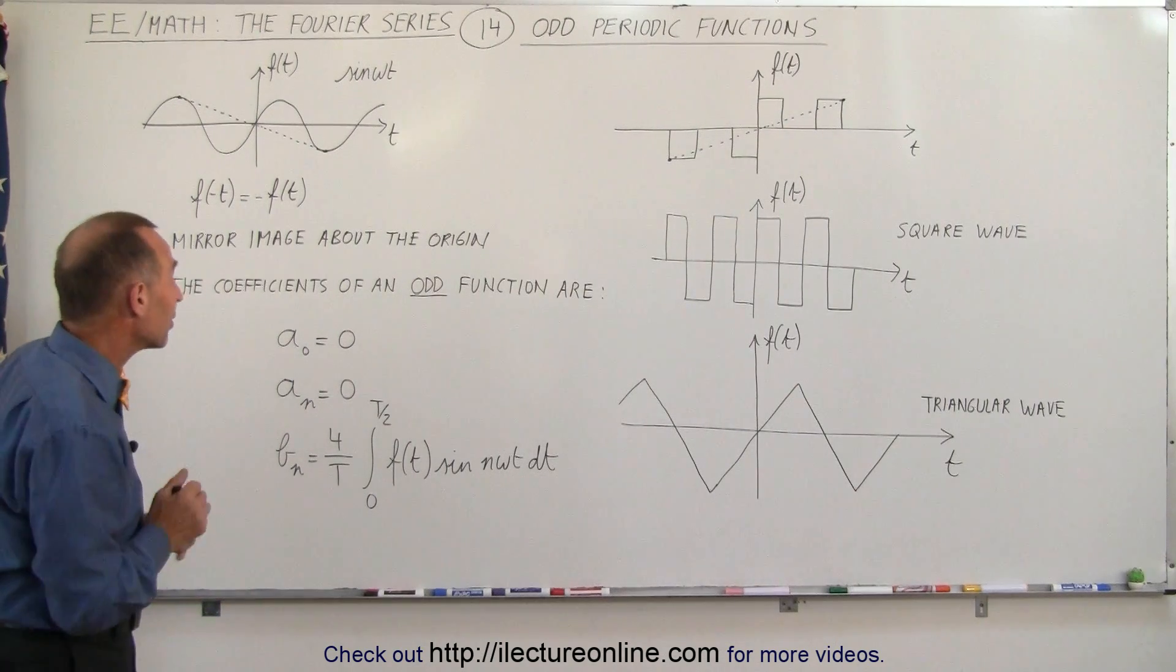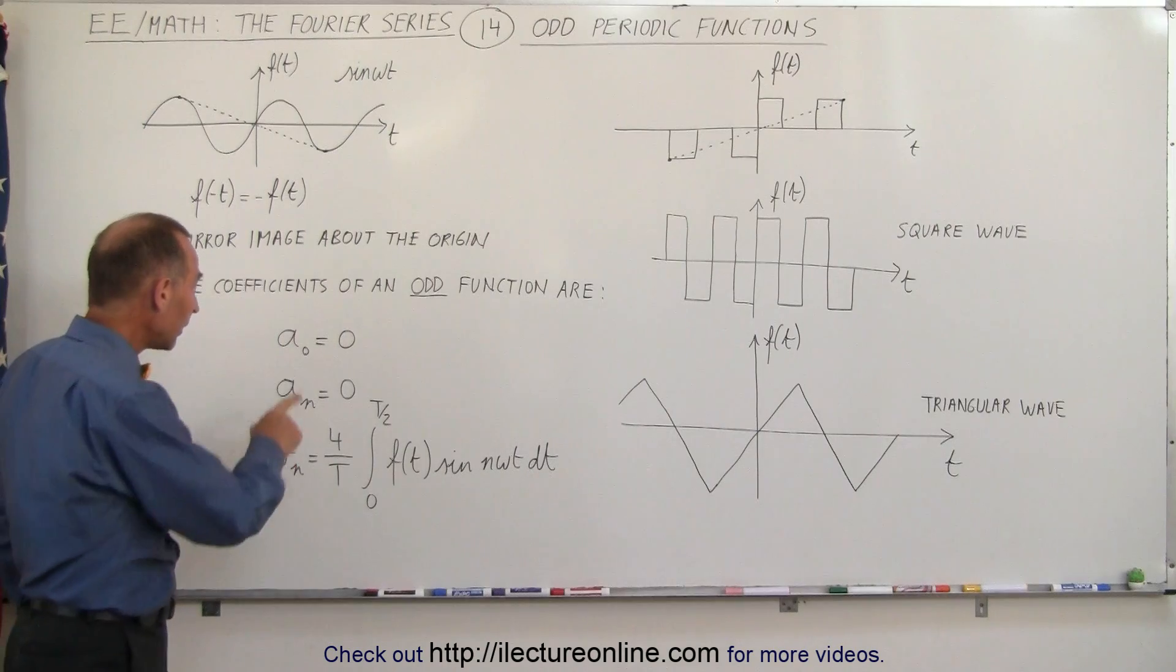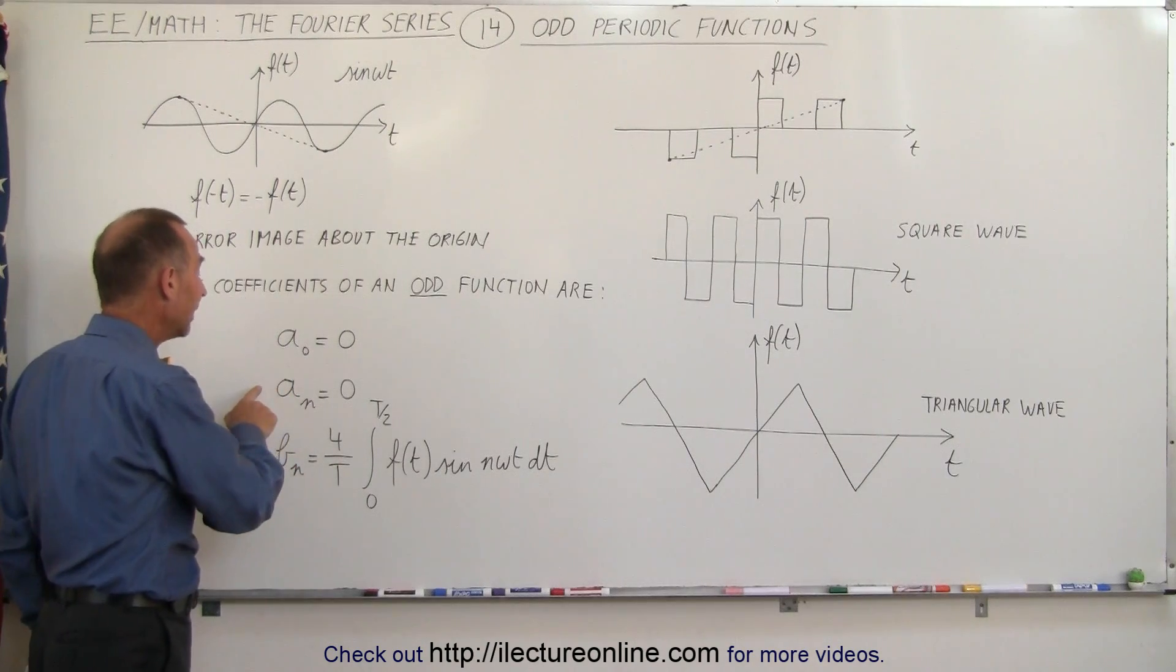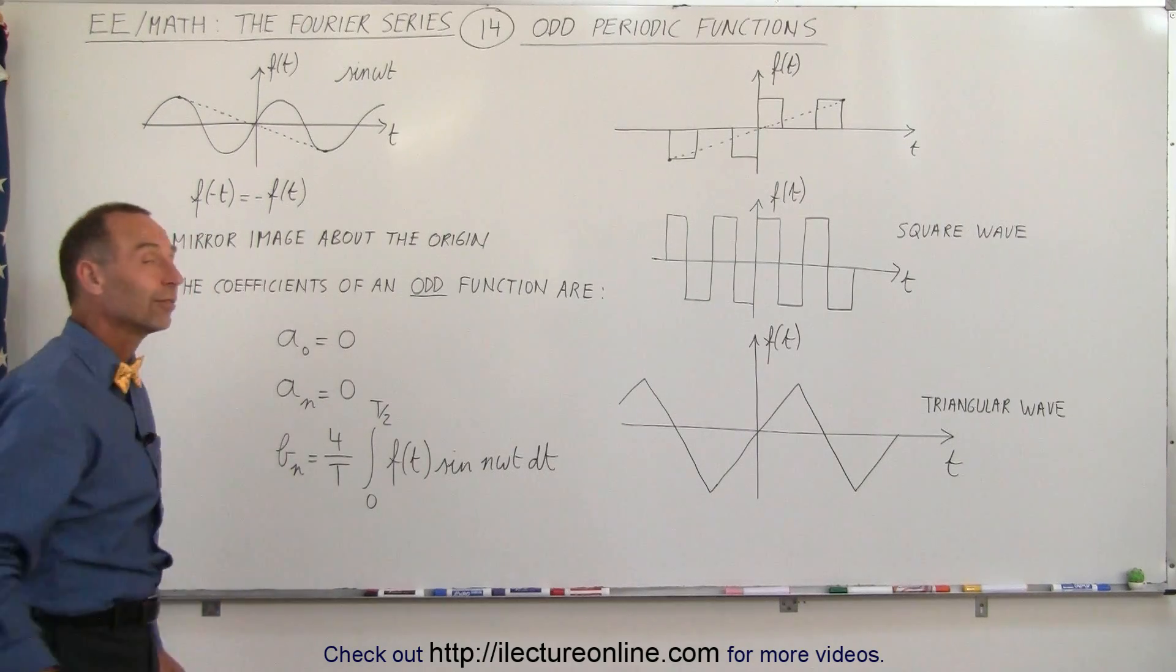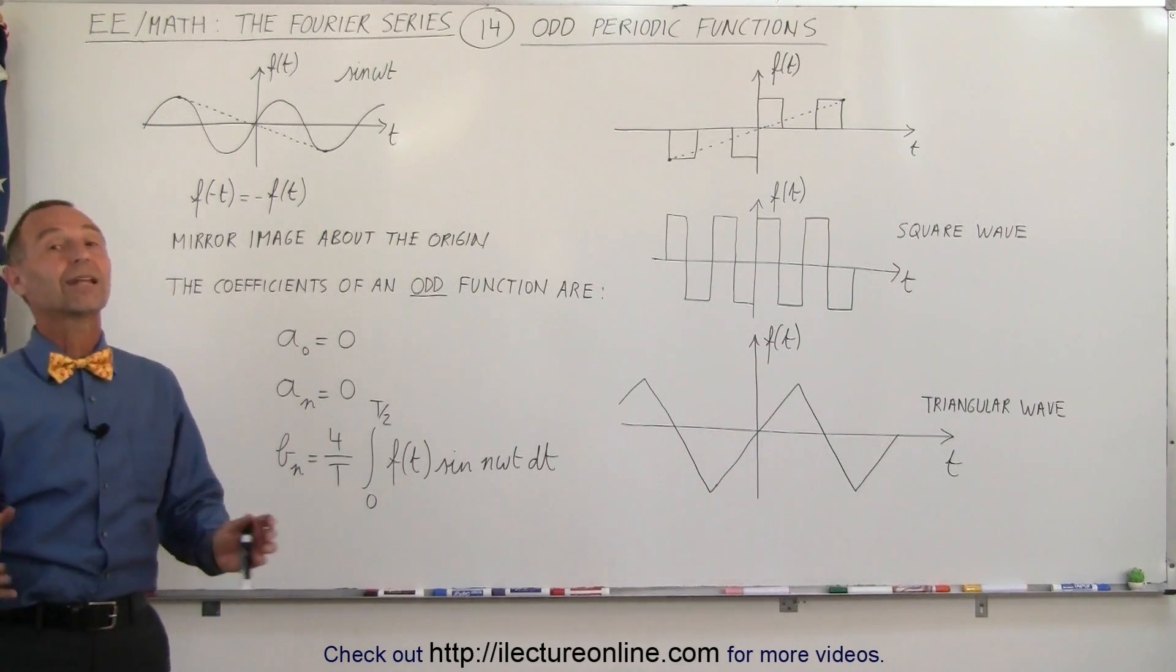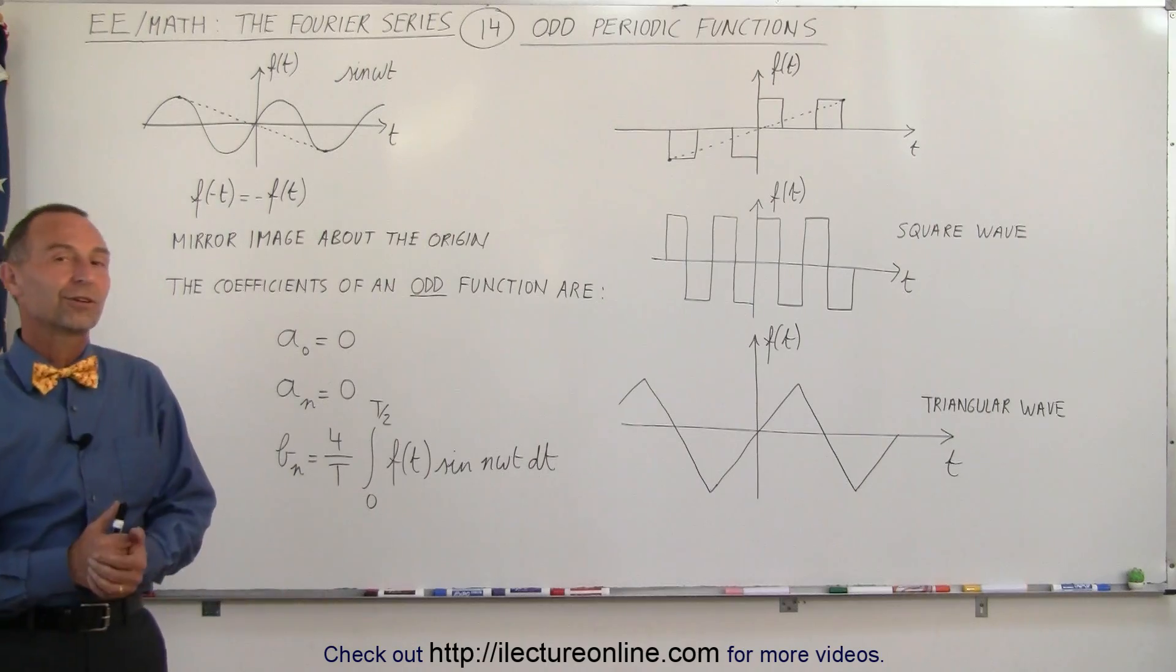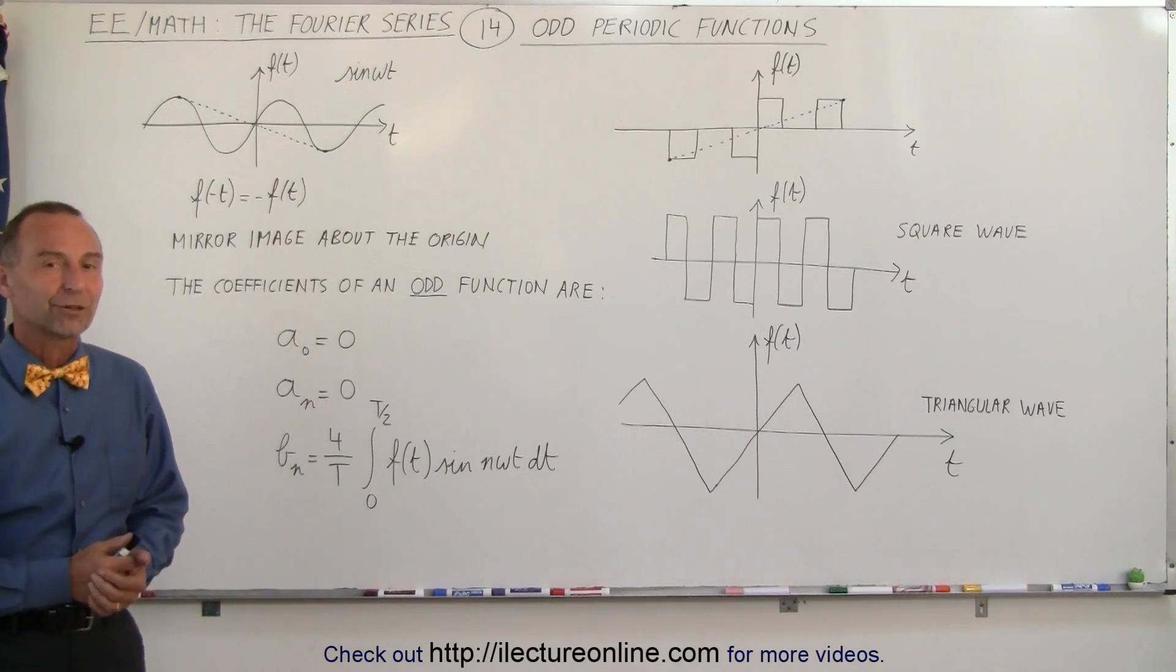So for the even periodic functions you have to find the a_0 and the a_n, then for the odd periodic functions you only have to find the b_n's, and so your job now will be a lot easier when you're doing the Fourier series of odd and even periodic functions.